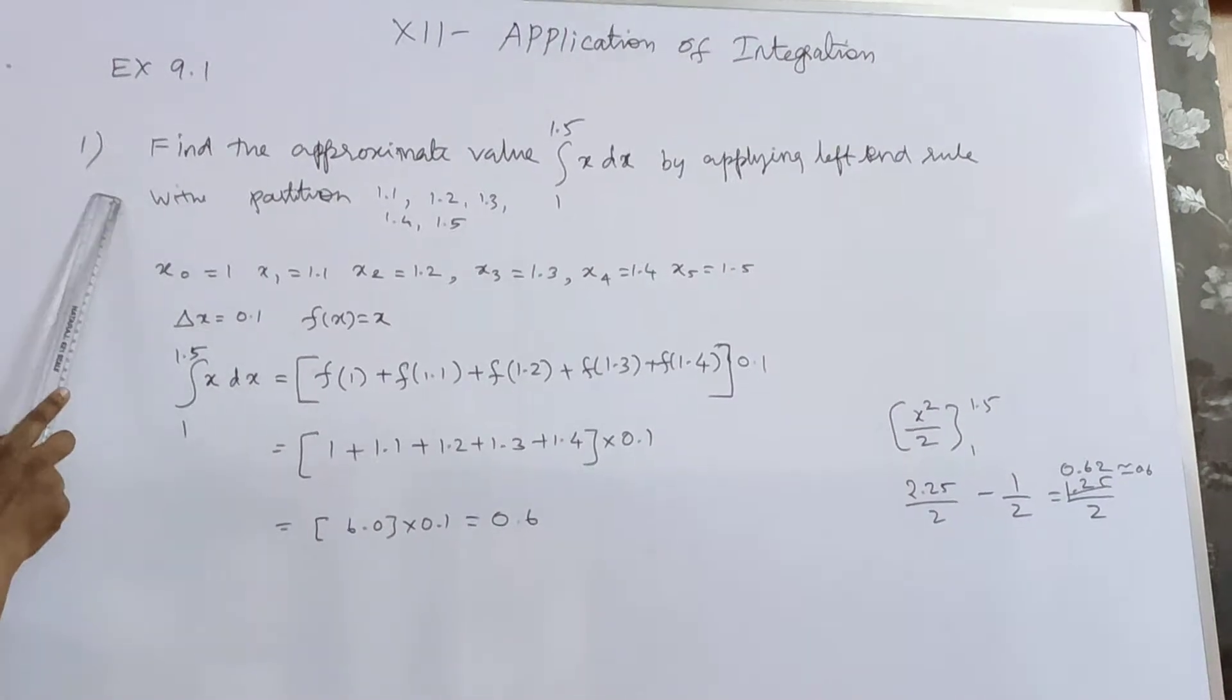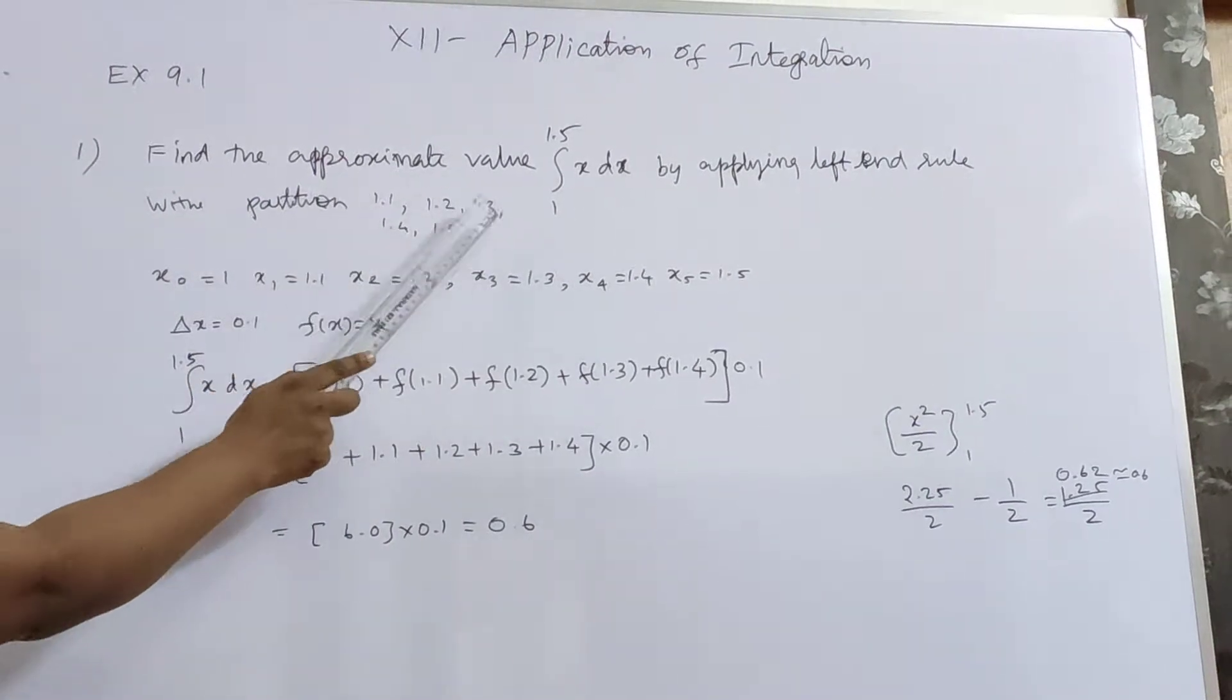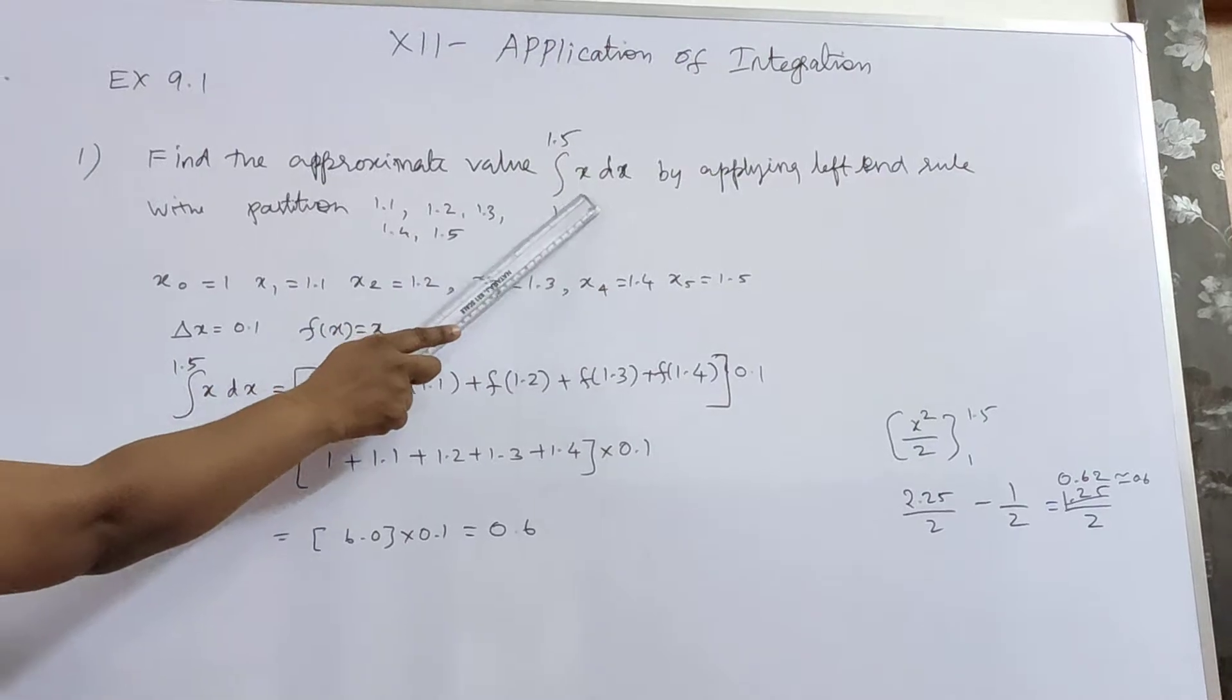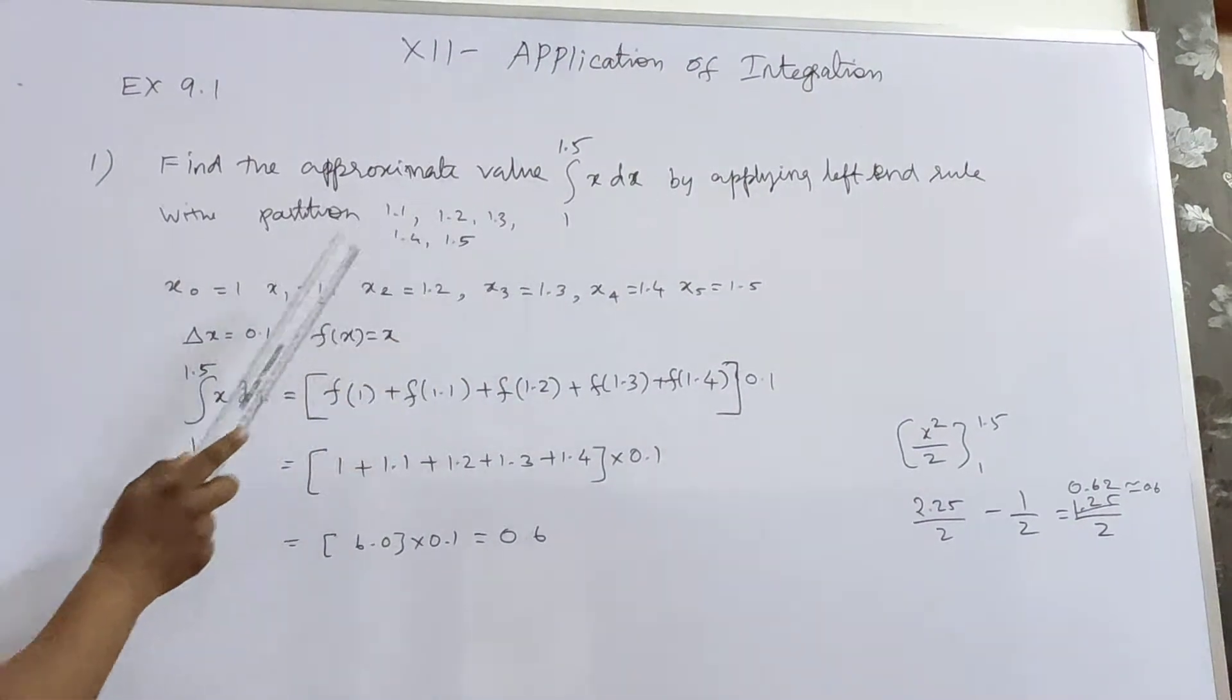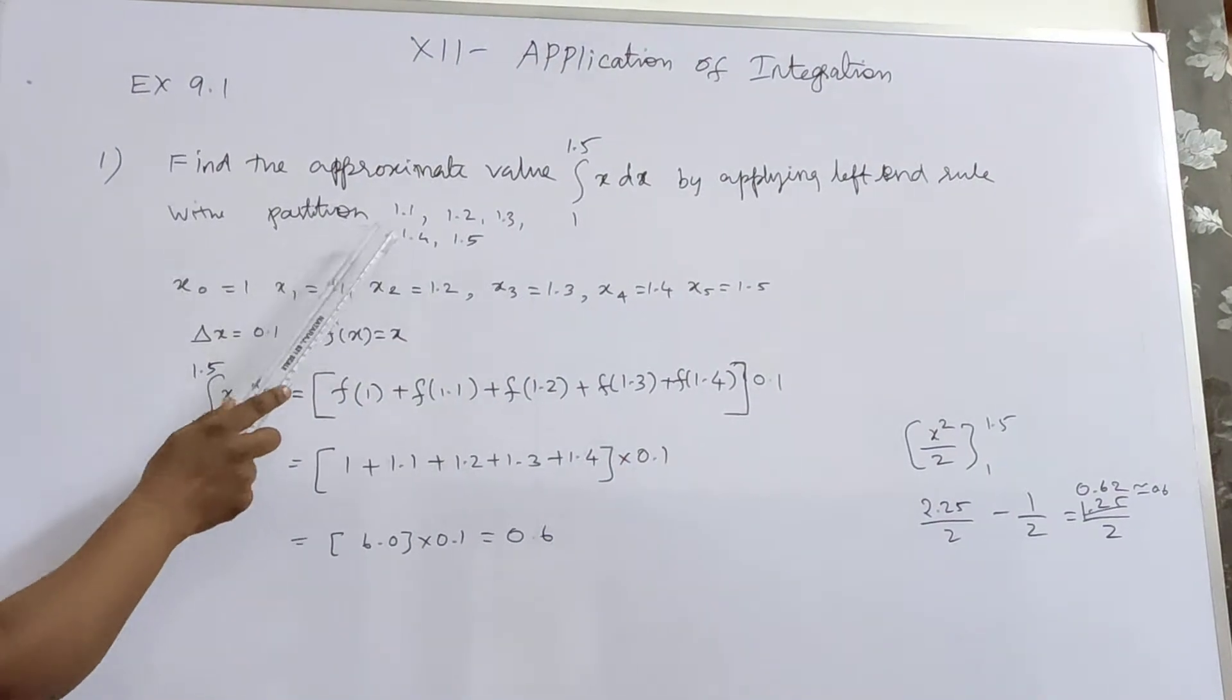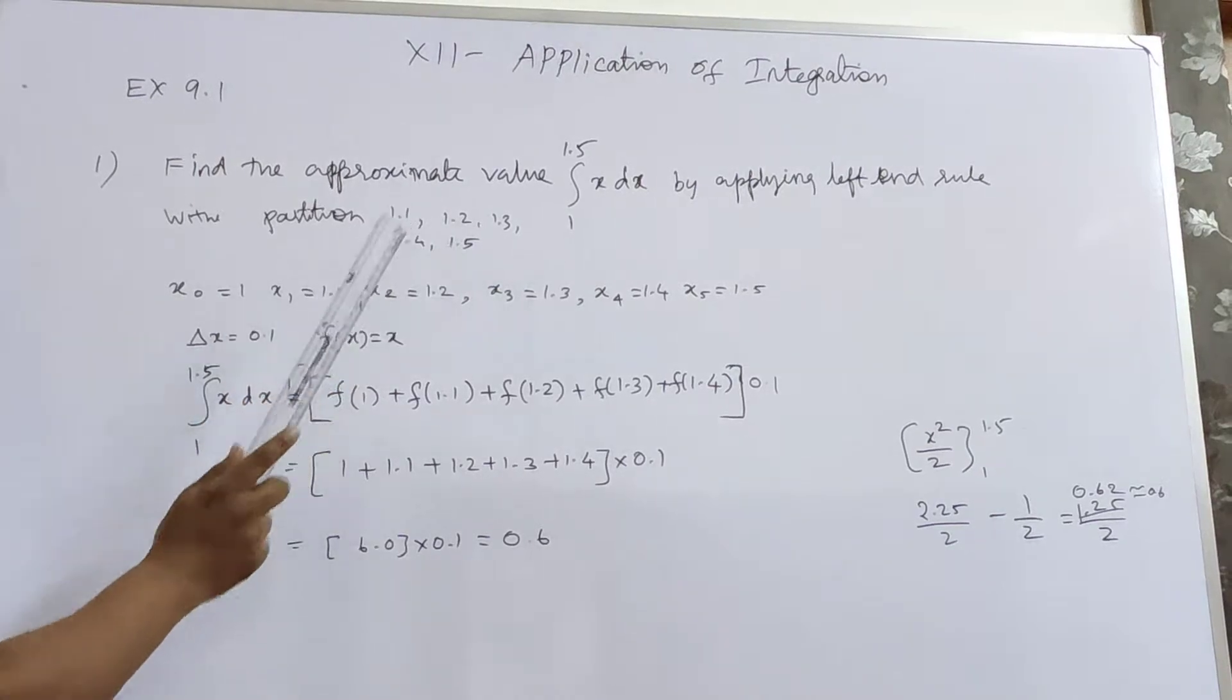Example 4.1: Find the approximate value of integral 1 to 1.5 of x dx by applying left-hand rule with partition 1.1 to 1.5.